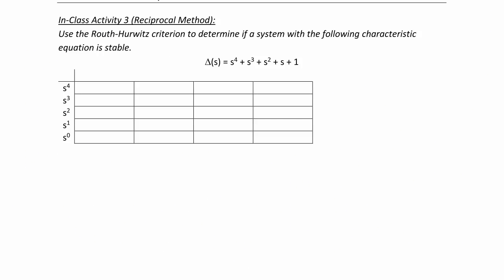Let's try another example. Use the Routh-Hurwitz criterion to determine if a system with the following characteristic equation is stable. Delta of s is equal to s to the 4th plus s cubed plus s squared plus s plus 1. The first row is going to be 1, 1, 1, and the second row is going to be 1, 1, since all the coefficients are 1. B1 is negative 1 times 1 minus 1 times 1, divided by 1, so B1 is equal to 0. As we did before, we use a small positive number when we get a 0 in the first column, so here I'm going to put epsilon greater than 0.